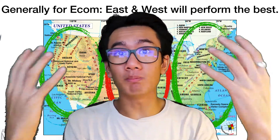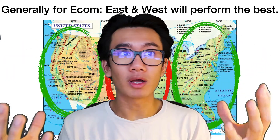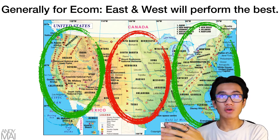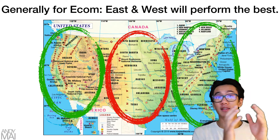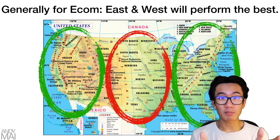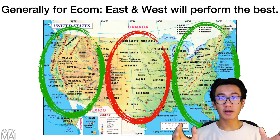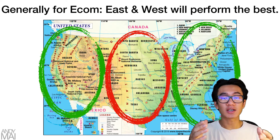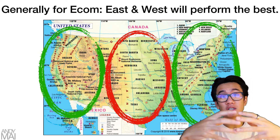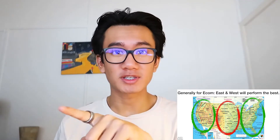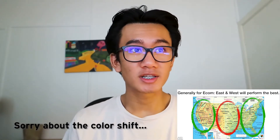America is so big and broad — it's like three different countries. The east coast is completely different from the west coast, which is completely different from mid-America. You should treat it like three different countries, and that's how you really double down and get much bigger results. As you can see, I've split it into three sections.